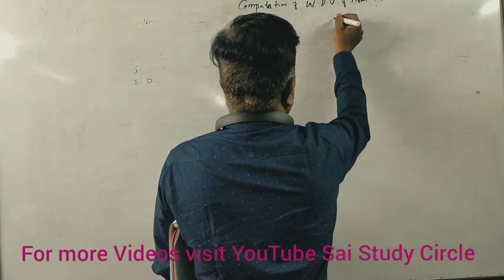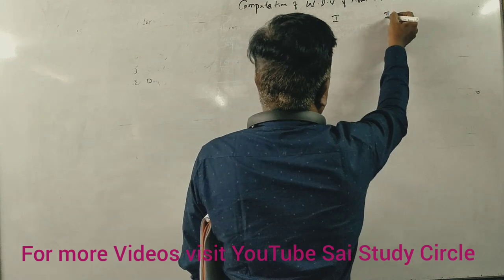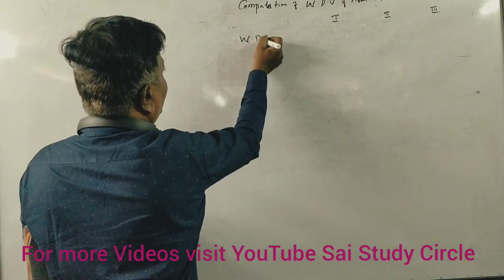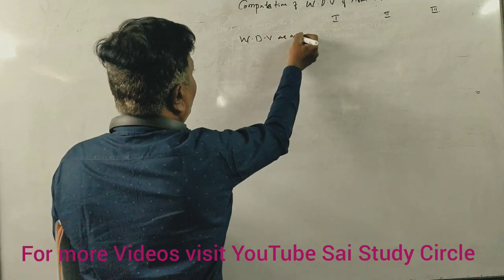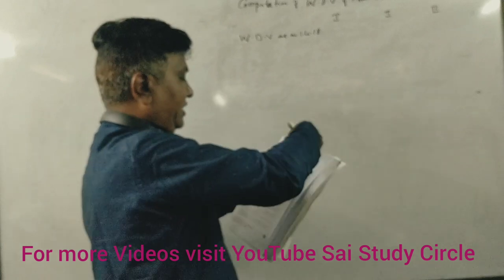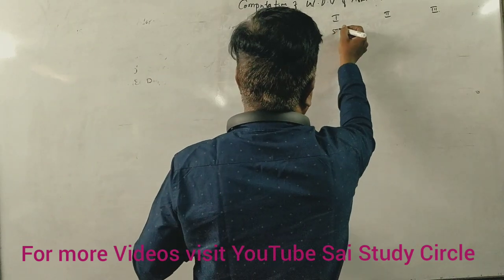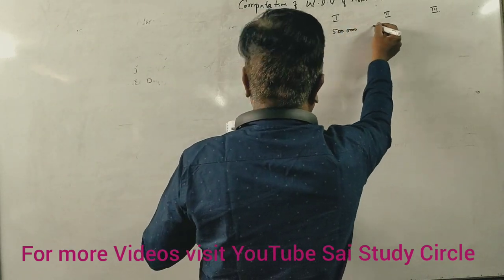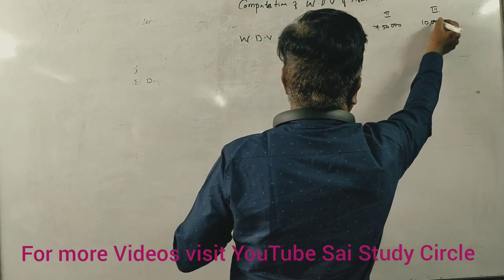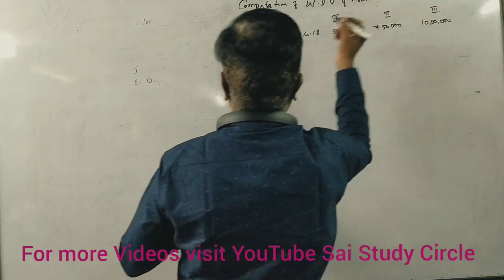Block. First asset, 2nd block, and 3rd block. Written down value as on 1-4-2018: 5 lakhs, 7 lakhs 50 thousand, and 10 lakhs. Correct? Yes.